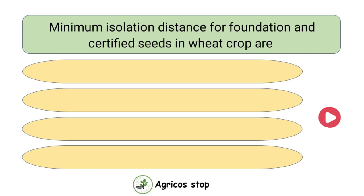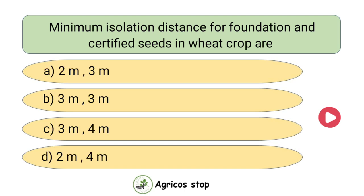Minimum isolation distance for foundation and certified seeds in wheat crop are? Options are 2 and 3 meters, 3 and 3 meters, 3 and 4 meters, and 2 and 4 meters. The answer is 3 and 3 meters. Minimum isolation distance for foundation and certified seeds in wheat crop are 3 meters and 3 meters.